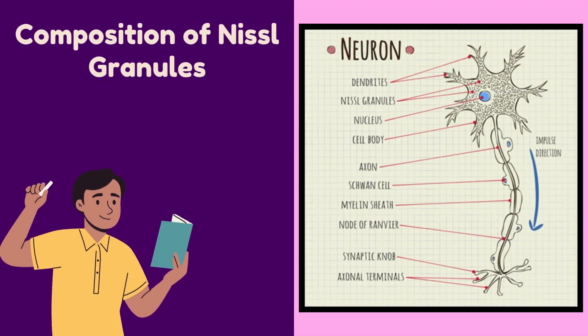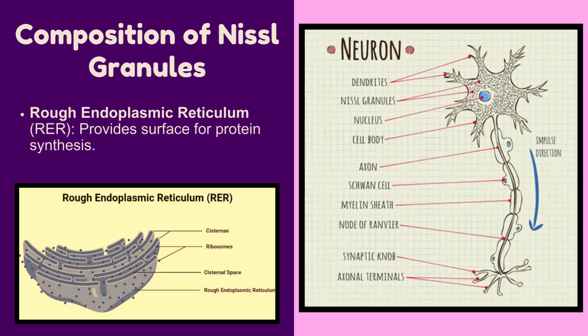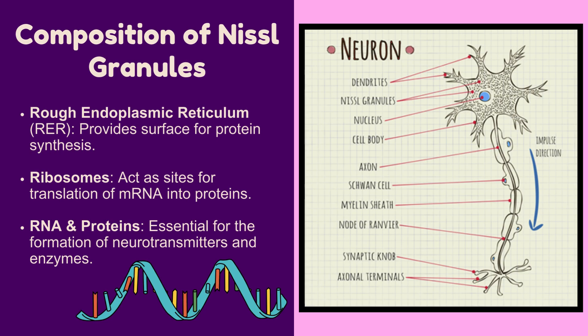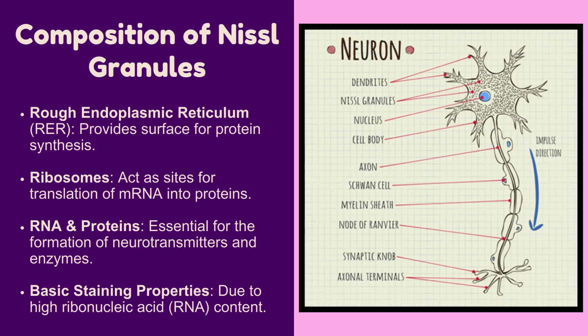Composition of Nissl Granules. Nissl granules consist of: Rough endoplasmic reticulum, which provides a surface for protein synthesis; Ribosomes, which convert mRNA into proteins required for neuronal function; RNA and proteins, essential for neurotransmitter production and enzyme formation. Due to their high RNA content, they stain darkly with cresyl violet and toluidine blue.